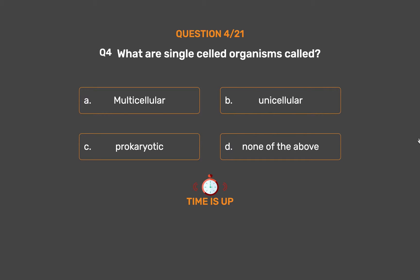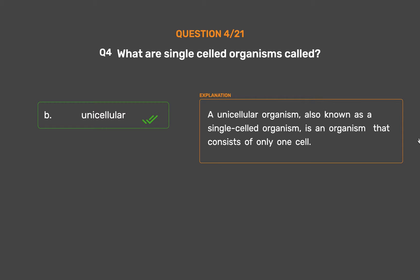The correct answer is Option B: Unicellular. A unicellular organism, also known as a single-celled organism, is an organism that consists of only one cell.